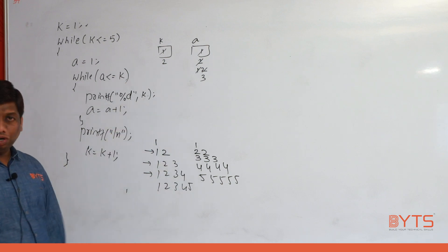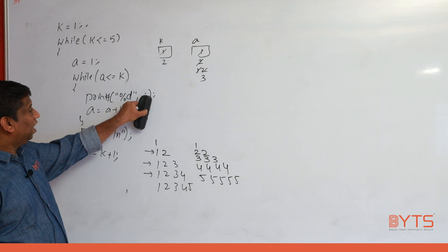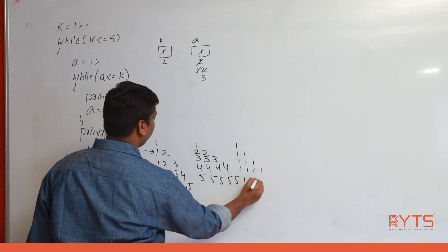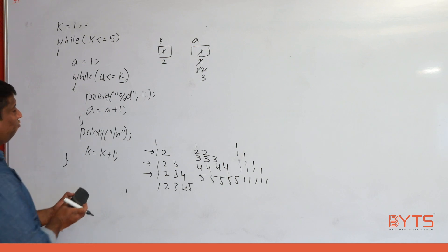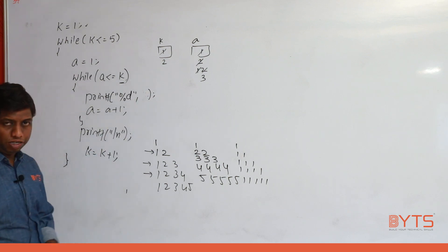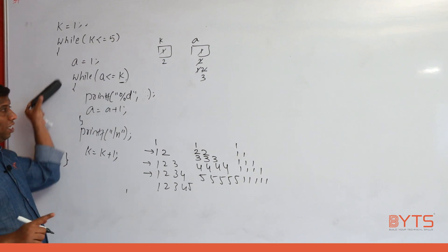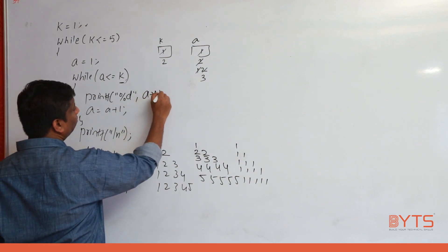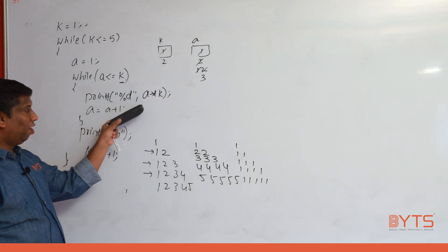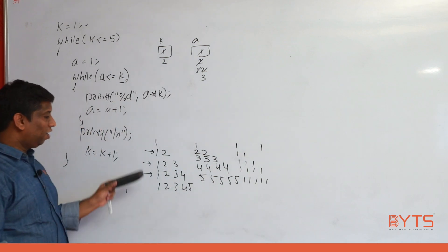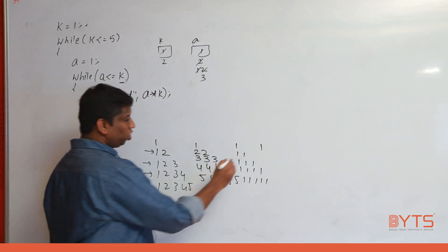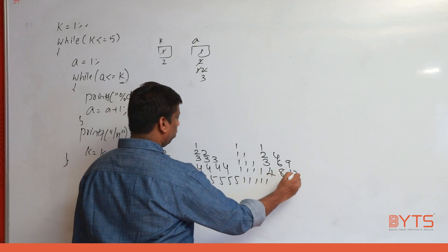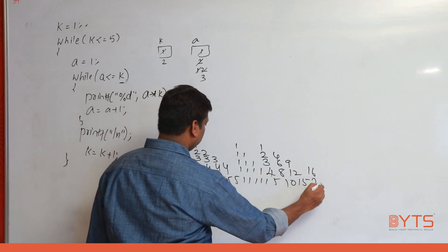For example, if you write 1 instead of k, only 1s are printed in the triangle pattern. If you write a star character, stars are printed. Now if we print a * k instead: first time k = 1, a goes 1, so prints 1. Second time k = 2: prints 2, 4. Third time k = 3: prints 3, 6, 9. Fourth: 4, 8, 12, 16. Fifth: 5, 10, 15, 20, 25 — these are the multiplication tables.